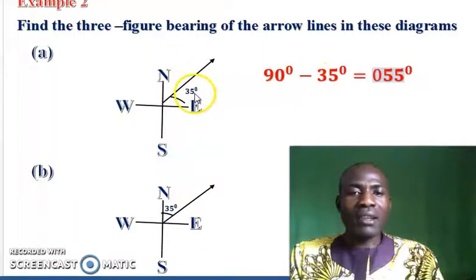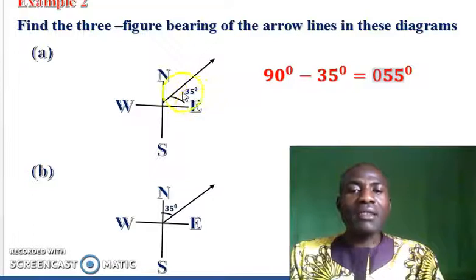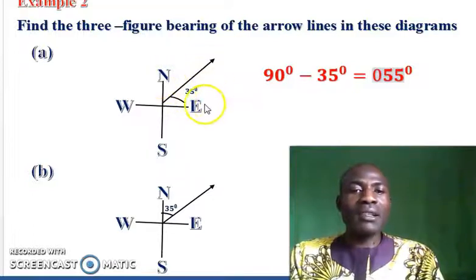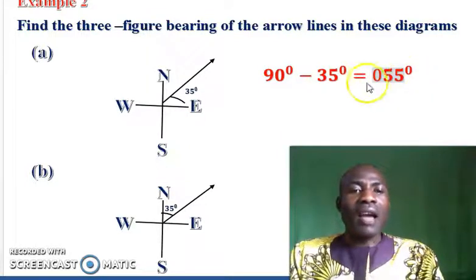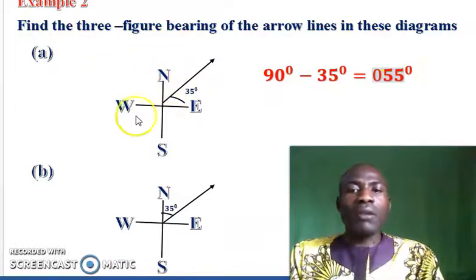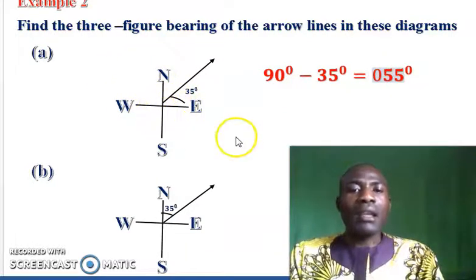We have converted 35 degrees east of north into a three-figure bearing, which is 055 degrees. That is the three-figure bearing for problem A.